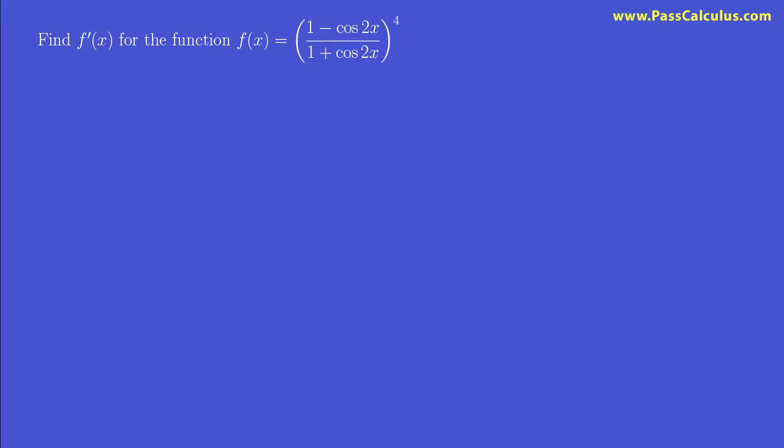For this question, the outermost function is the power of 4, right? So we're going to start off by taking the derivative of something to the power of 4. And when we come to the inside part, it's going to be a quotient rule.